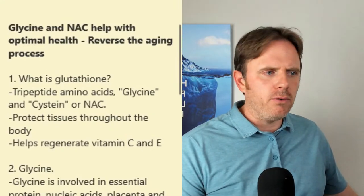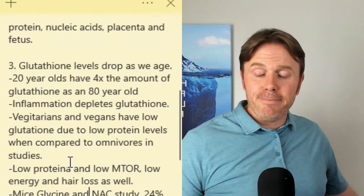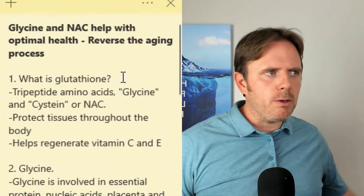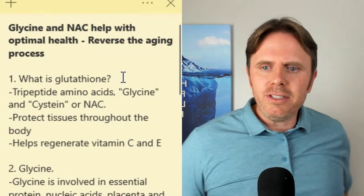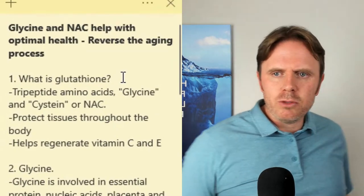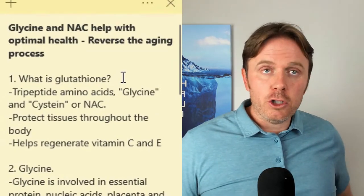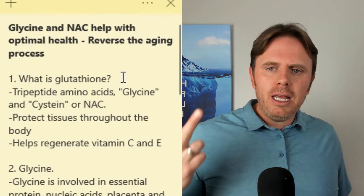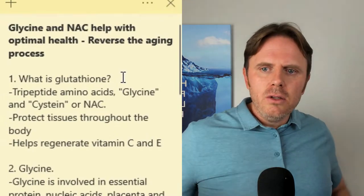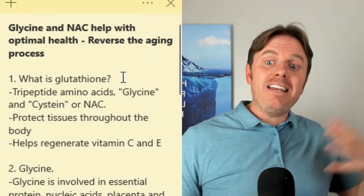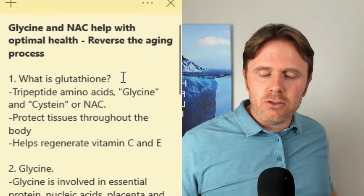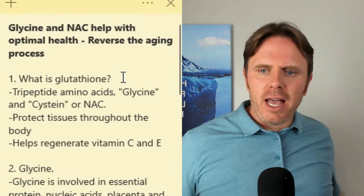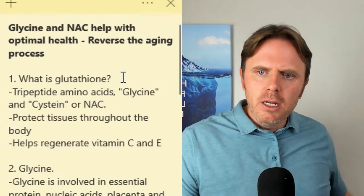First thing out of the gate: what is glutathione? Glutathione is going to be one of the end results of cysteine metabolism. Glutathione is a tripeptide made up of cysteine, glutamine, and glycine. When we take cysteine or N-acetylcysteine, which is a derivative of cysteine, we're helping in essence to bump up glutathione, which is our master antioxidant.